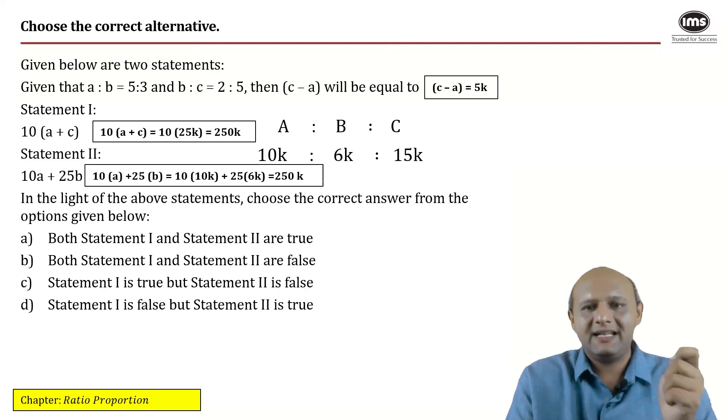Also even in the next case, if you notice 10a which is 100k and 25b would be 150k. So therefore that is also not equal to c minus a. So what's the answer? Answer is option two, okay?